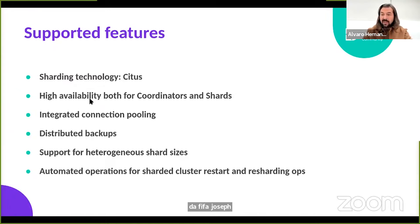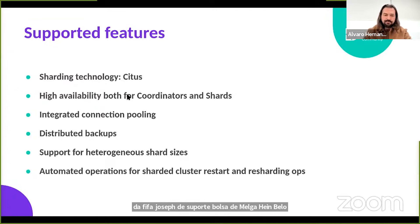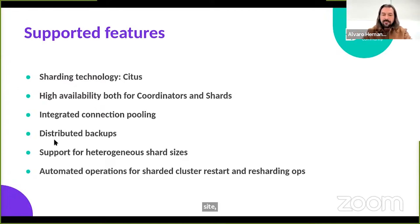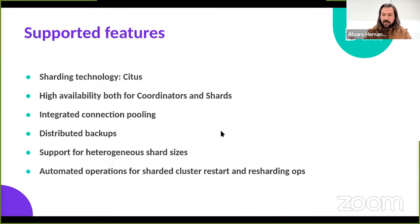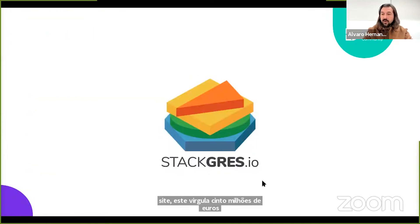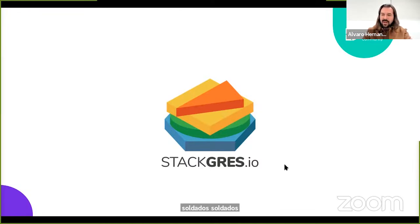It supports high availability for both coordinators and shards, integrated connection pooling — which is very important for Citus — and distributed backups so you get a consistent backup across all your shards. Also very unique in the industry: heterogeneous shards, because data distribution may not be homogeneous and one shard may need to be bigger than another. We can achieve this by overwriting the specification for a particular shard. It also supports automated operations for resharding and restarting a cluster. I'm available on DoK Slack, Twitter, LinkedIn — ping me for any questions. Thank you.